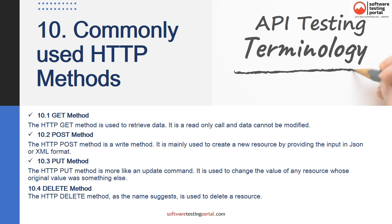3. The HTTP PUT method is like an update command. It is used to change the value of any resource whose original value was something else. PUT methods can also create resources, but only if the request is from the client and not the server. Calling the same PUT request again makes no changes, meaning it is idempotent. 4. The HTTP DELETE method, as the name suggests, is used to delete a resource. If made successfully, the status code returned is 200 OK. DELETE methods are also idempotent since a deleted resource cannot be affected again.